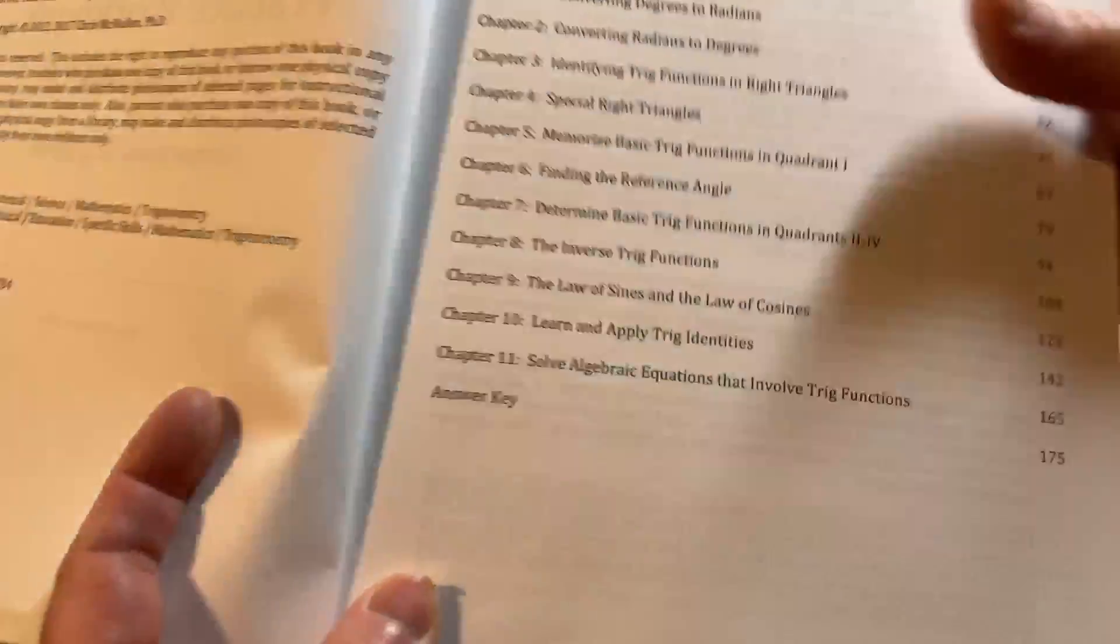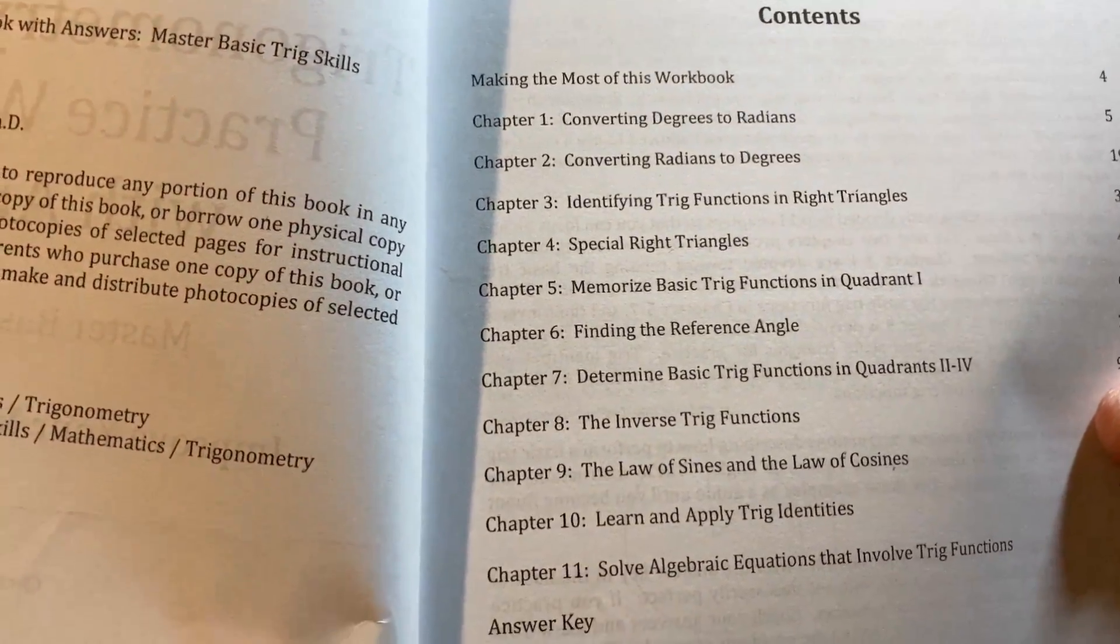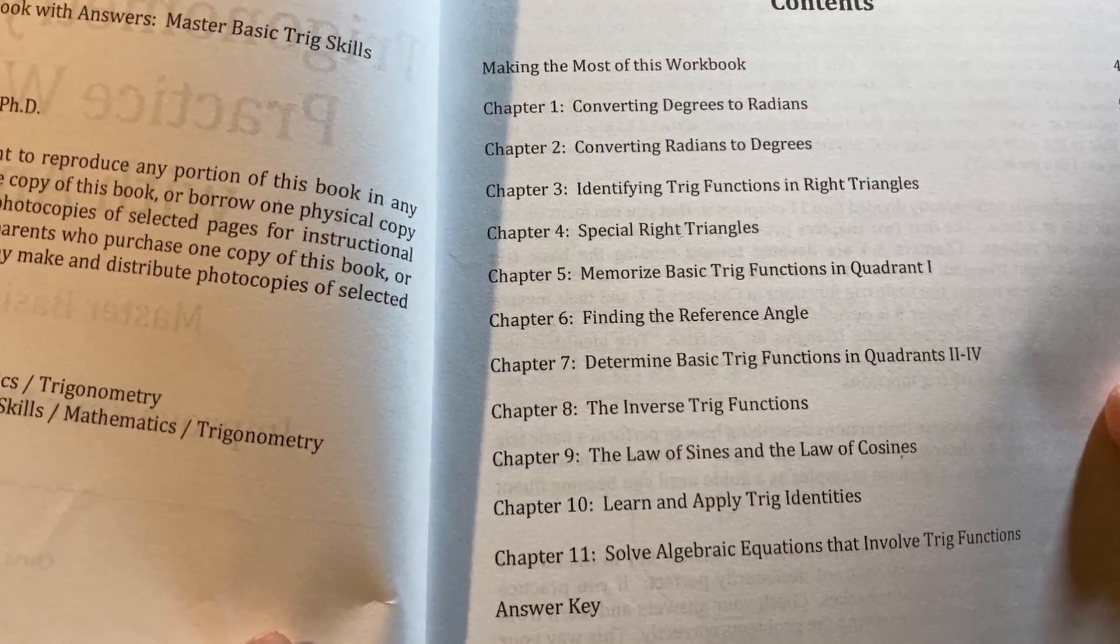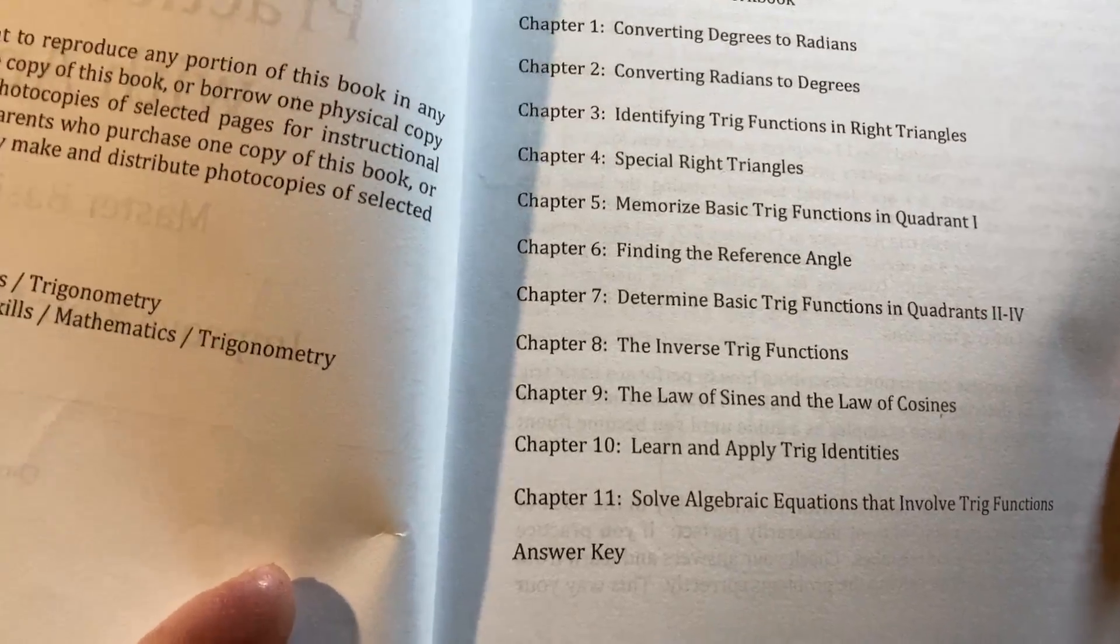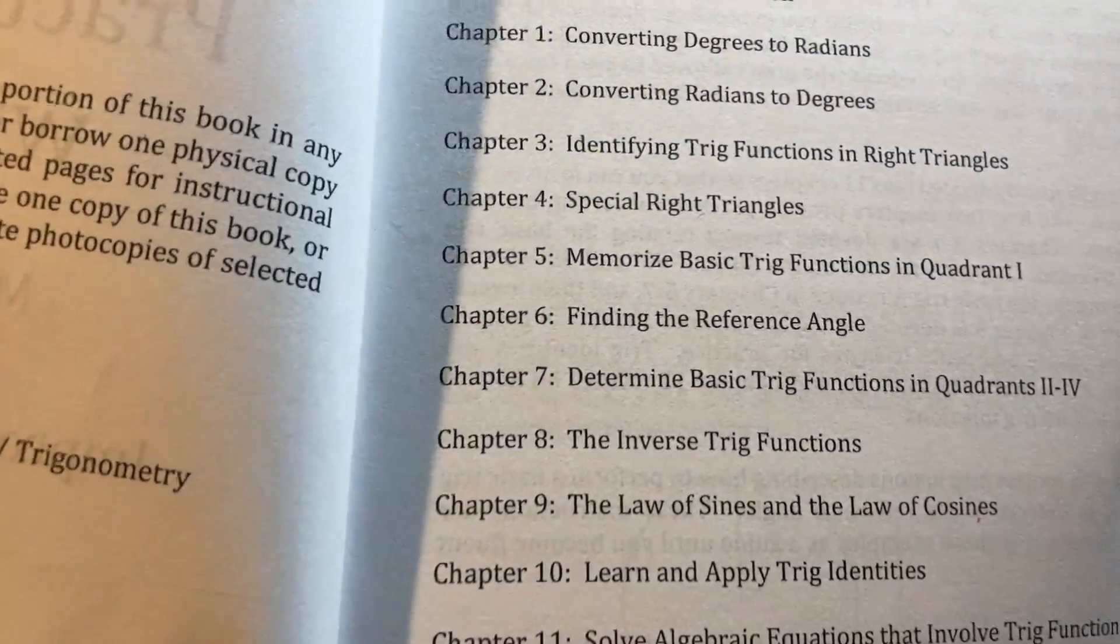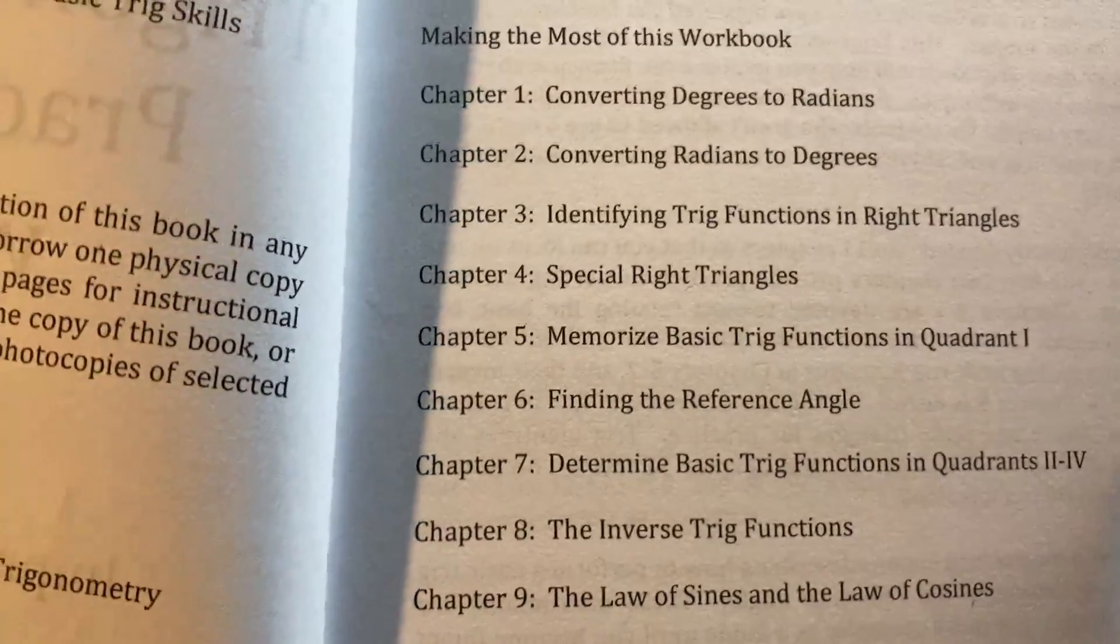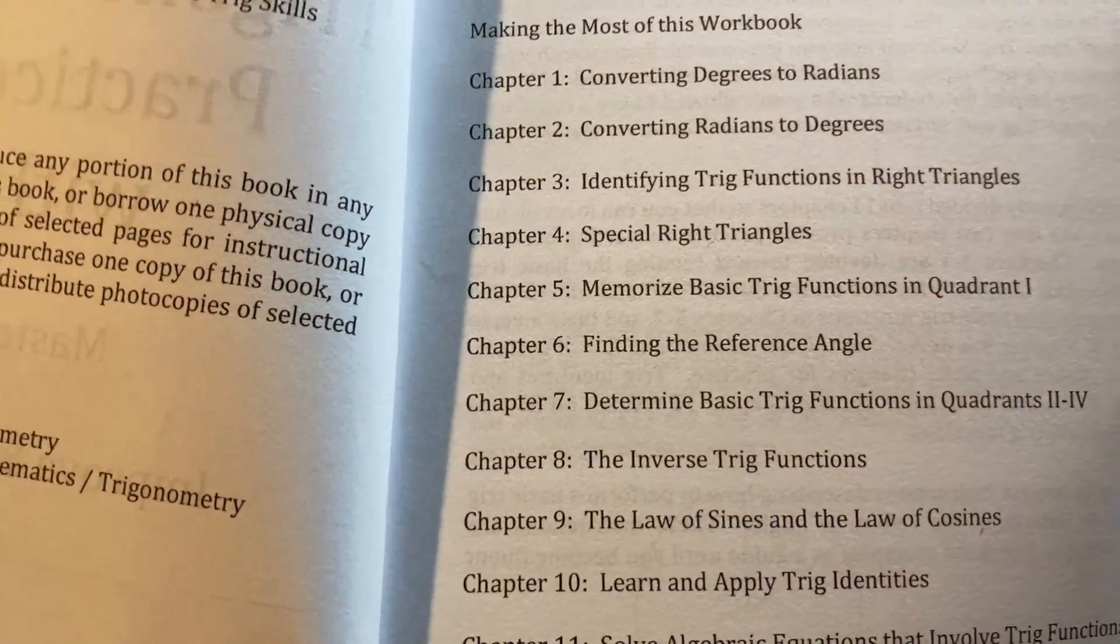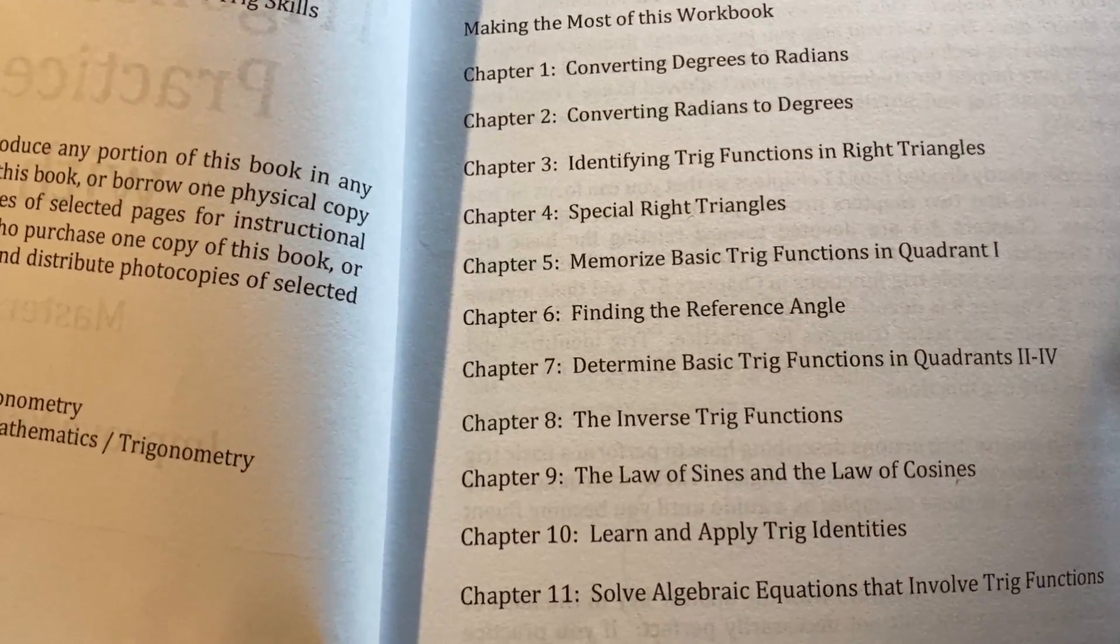So here's the topics in this book. Converting degrees to radians, converting radians to degrees, identifying trig functions in right triangles, special right triangles. Here we go, this is what I love about this. Chapter 5: memorize basic trig functions in quadrant 1. Yes, that is the most important thing. That's exactly how I do it.